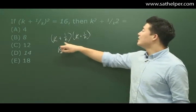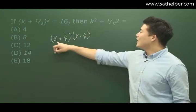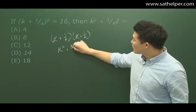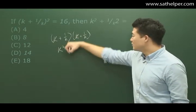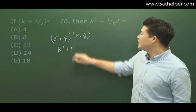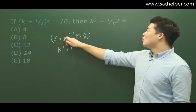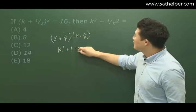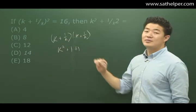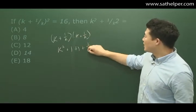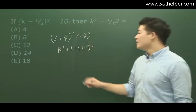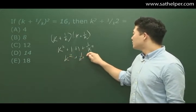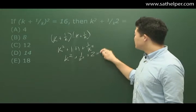For the inside terms, we do the outer: k times 1/k equals k/k, which is 1. Then 1/k times k is also k/k, which is again 1. Finally, 1/k times 1/k gives us 1/k². So we have k² + 1/k² + 2 = 16.